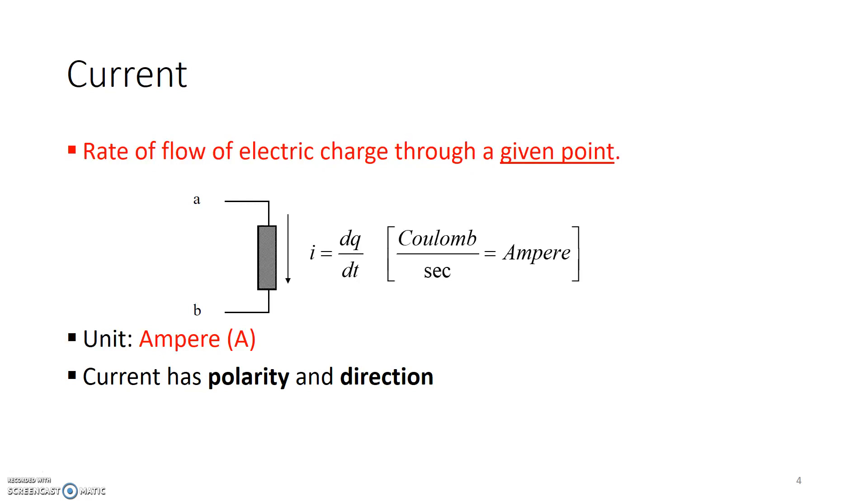So current can be, since it has a polarity, it can be either positive or negative. Basically, what a positive or negative current means is a current flowing in a particular direction, and if it has a negative value, then it basically means that the current was actually supposed to be flowing the other direction than what we had thought. So we start out by picking an arbitrary direction for current, and if the sign of the current that's calculated or measured comes out to be negative, then really the current is flowing in the opposite direction. More on this when we talk about passive sign convention later.